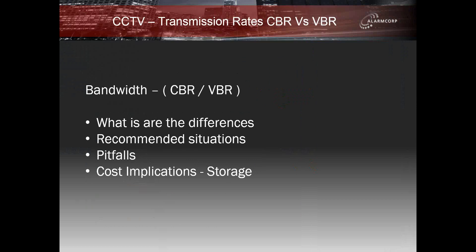Our topic today is an overview of the transmission of video data in relation to IP cameras and the two main methods of this data stream being constant and variable bitrates. Some manufacturers may not use these basic terms but variations of them. Overall, these are the two most commonly used throughout the industry. We will cover the main differences between these and the recommended situations they would be used, including the pros and cons of each implementation.